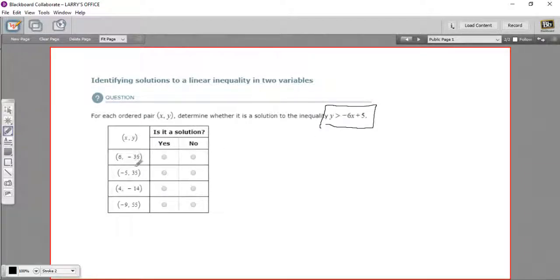An ordered pair is two numbers with a comma in between them, and the first number represents x, and the second number represents y. So if we want to find out whether it's a solution, what we need to do is take the x value and the y value and plug them in for x and y in this inequality and see if the inequality ends up being true when we do that. Let me show you how that works.